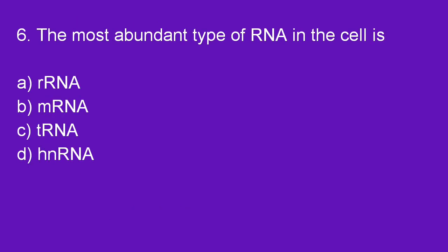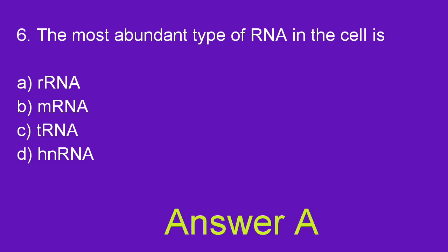Next question: The most abundant type of RNA in the cell is rRNA. Option A is right.